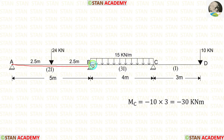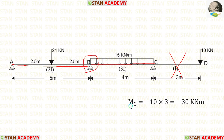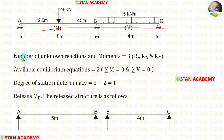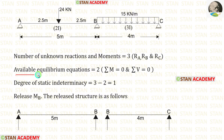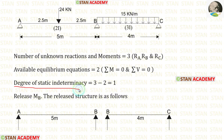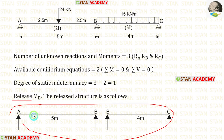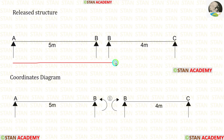Now let us take spans AB and BC and calculate MB. There is no need to consider the overhanging span anymore since we have already calculated moment MC. The number of unknown reactions and moments are 3: RA, RB, and RC. The available equilibrium equations are 2: Sigma M = 0 and Sigma V = 0. The degree of static indeterminacy is 3 minus 2, which equals 1. Let us release MB — this is our released structure.